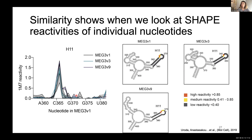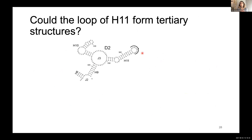Focusing on helix 11 in our secondary structure results, we see very good agreement in SHAPE reactivities across the three variants in that region. Notably, the loop residues show consistently very low SHAPE reactivity values, even though unpaired residues would be expected to show high reactivities. This suggested these loop residues might be involved in long-range interactions, forming tertiary structures such as a pseudoknot. We therefore searched the entire MEG3 sequence for sequence patches that could act as donors for a pseudoknot motif.